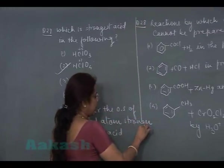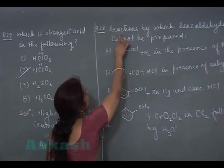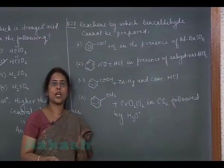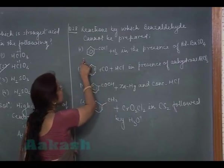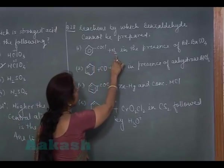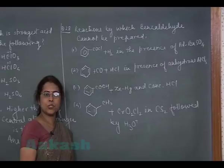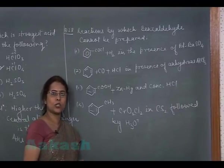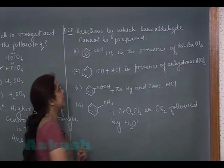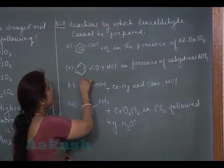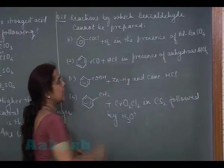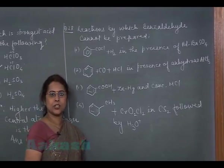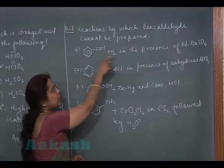The next question is question number 28. Reaction by which benzaldehyde cannot be prepared. It means which of the given reaction cannot be used for the preparation of benzaldehyde. The first reaction is given benzoyl chloride plus hydrogen in the presence of palladium barium sulfate. This reaction is known as Rosenmund reaction. And Rosenmund reaction can be used for the preparation of any aldehyde. Second option is given benzene plus CO plus HCl in presence of anhydrous aluminium chloride. That is known as Gatterman-Koch aldehyde synthesis. So this reaction can also be used for the preparation of benzaldehyde.